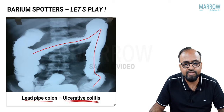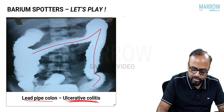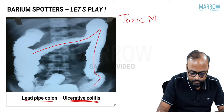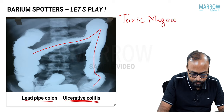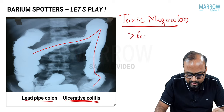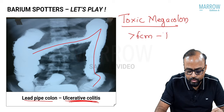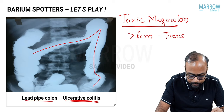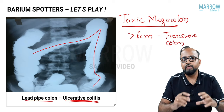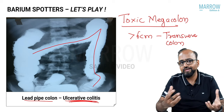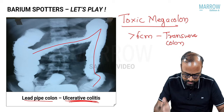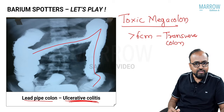A complication of ulcerative colitis you must know is toxic megacolon, characterized by progressive dilatation of more than six centimeters predominantly involving the transverse colon, with imminent perforation. Surgical treatment is the most definitive treatment. This is lead pipe colon of ulcerative colitis.